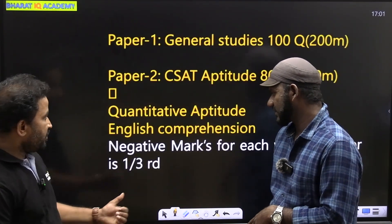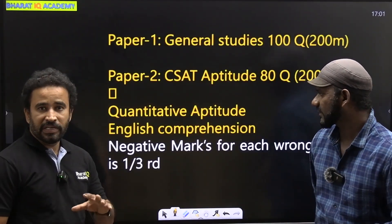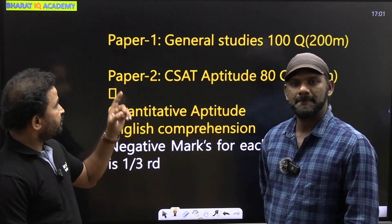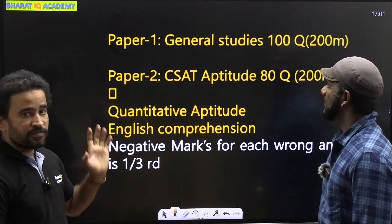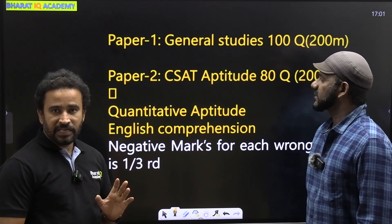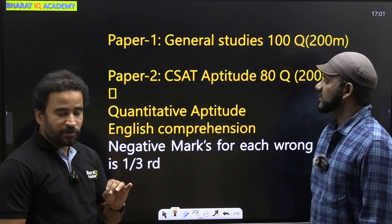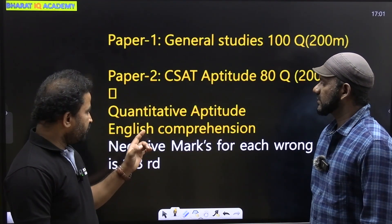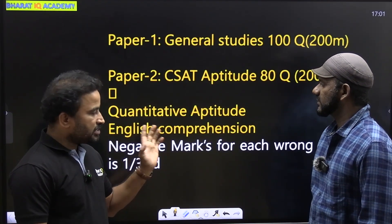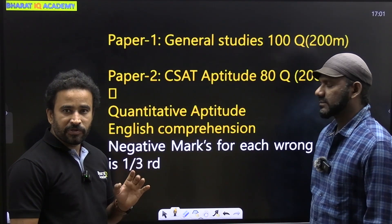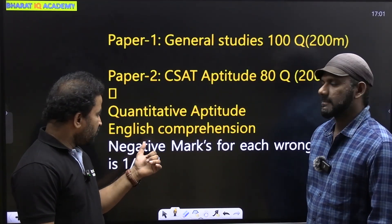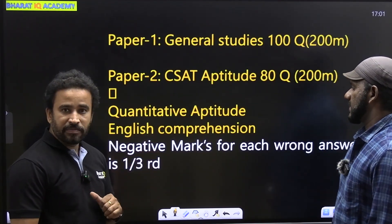In CSAT point of view, we have two types of paper. One is Paper 1, the next one is Paper 2. Paper 2 is only qualifying in nature. In Paper 2, we have two sections: one is Quantitative Aptitude and Mental Ability, and the other one is English Comprehension.